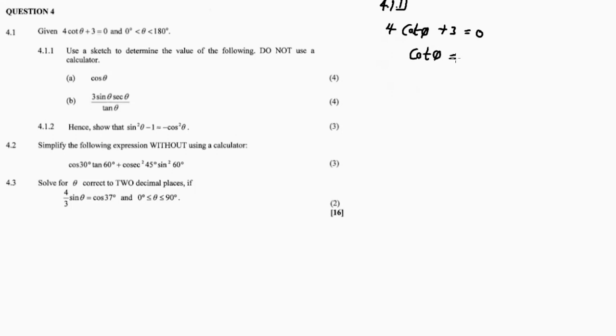Let's deal with the sketch part first. I am given 4 cos θ plus 3 equal to 0, between 0 degrees and 180 degrees. So let's make the trigonometric ratio — making cos θ the subject of the formula. So cos θ equals negative 3 divided by 4. So cos is adjacent over hypotenuse, which is x over r.